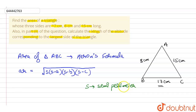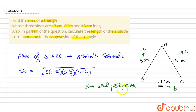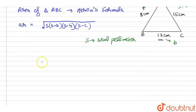Let us suppose 8 cm is A, 17 cm is B and 15 cm is C. So A, B and C are the respective sides of the triangle and S is the semi-perimeter. First of all, we will find the semi-perimeter S. We know that the perimeter of the triangle is the sum of all sides, so the semi-perimeter will be the sum of all sides divided by 2.